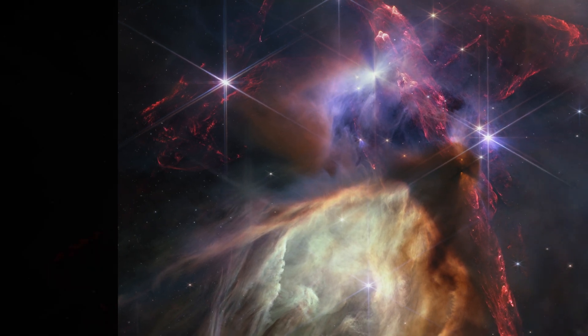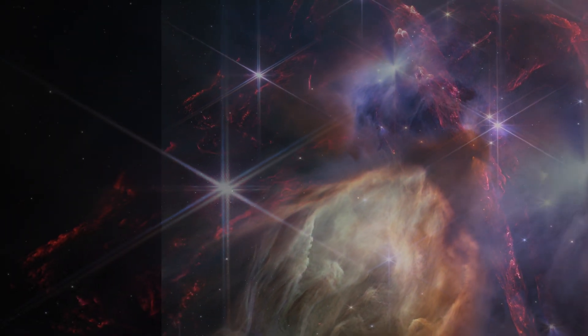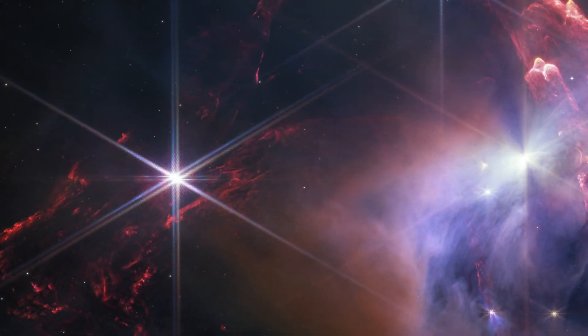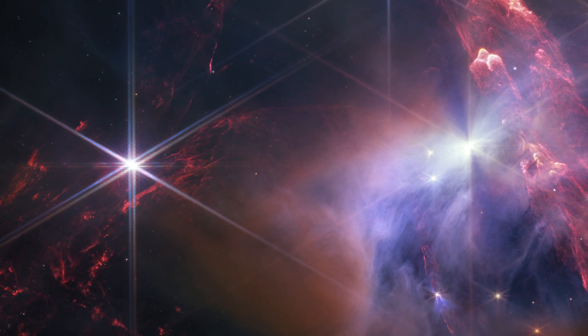A chaotic scene resembling explosions frozen in time, this new image from NASA's James Webb Space Telescope displays a field of about 50 young stars, many of them similar in mass to our Sun.